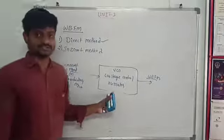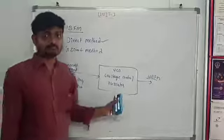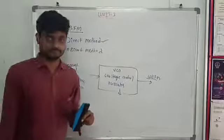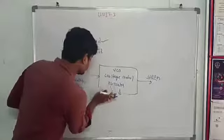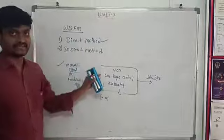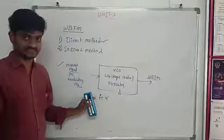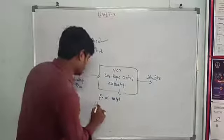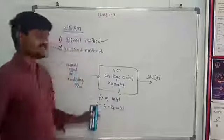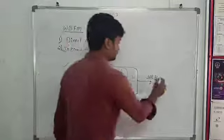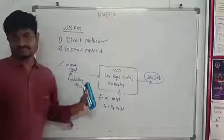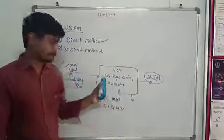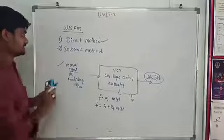In this method, we use a voltage controlled oscillator. It generates oscillations depending upon the amplitude of the message signal. The instantaneous frequency F_i is directly proportional to m(t), the amplitude of the message signal. So F_i equals Fc plus Kf multiplied by m(t). That is the direct method to generate wide band FM.